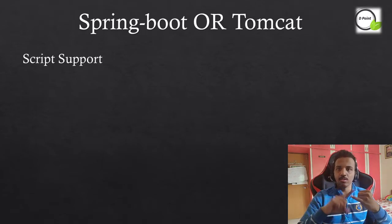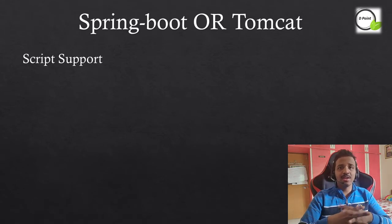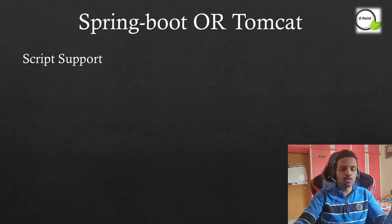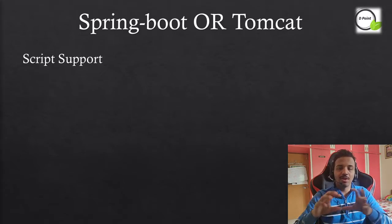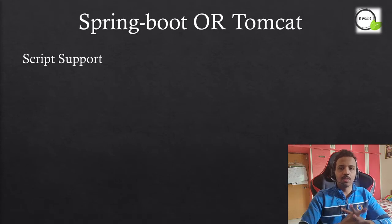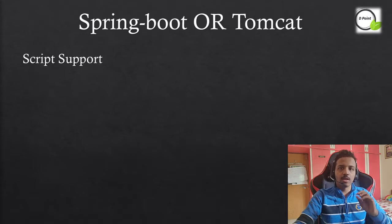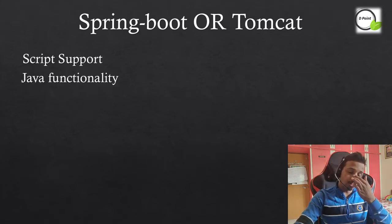The first point is script support. I have used JavaScript and Groovy script only. In Tomcat, we have a different place to put the files; in Spring Boot, you have a different folder structure to place your JavaScript. We're talking about external JavaScript files — inline scripts will be the same for both. Script support is there for both Spring Boot and Tomcat; just have the required dependencies in your lib folder. The path reference is the only difference.